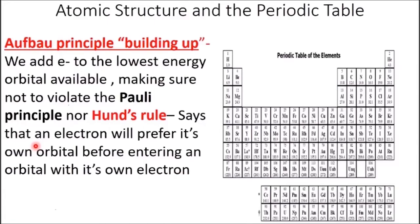The Aufbau principle says we add electrons to the lowest energy orbital available, making sure not to violate the Pauli principle nor Hund's rule. Hund's rule says an electron will prefer its own orbital before entering an orbital that already has an electron. Why? Coulomb's law — the orbitals are degenerate (same energy level), so adding an electron to a filled orbital when there's an empty degenerate orbital adds unnecessary electronic repulsion. It's called the bus rule: when you get on a bus, you'd rather sit by yourself before sitting next to someone. All empty seats must be filled before electrons start doubling up.